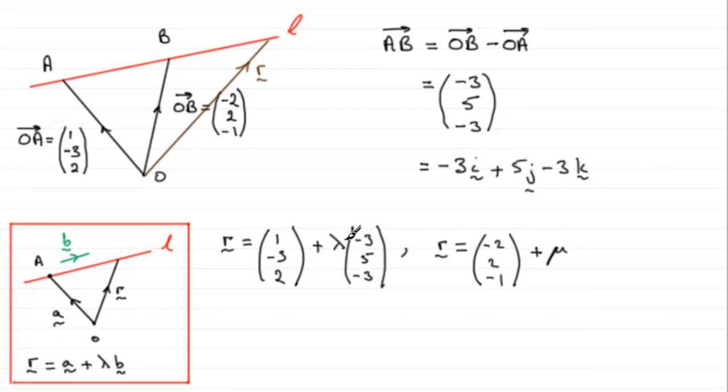But again, it's up to you. You might want to use S here, and if that was the case, I might have used T here. So again, totally up to you. But it'd be plus mu times a vector parallel to the line L, which again could be AB. So it's (-3, 5, -3). So there's two possibilities for writing down a vector equation for the line L.